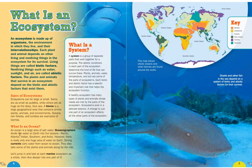Oceanographers divide the water on Earth into five oceans: the Pacific Ocean, the Atlantic Ocean, the Indian, the Southern, and the Arctic oceans. You can see them on the map. However, there is really only one huge area of water on Earth. Strong currents carry water from ocean to ocean and take some of the plants and animals along for the ride.